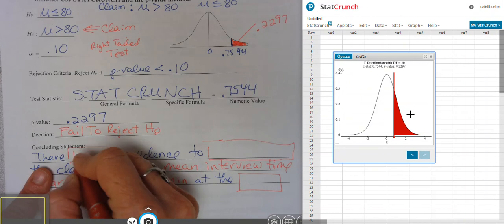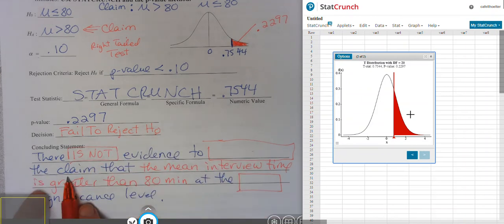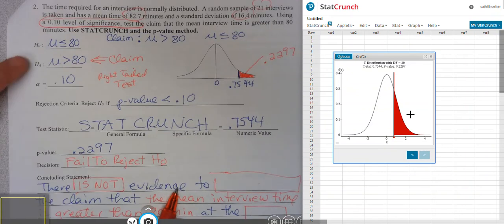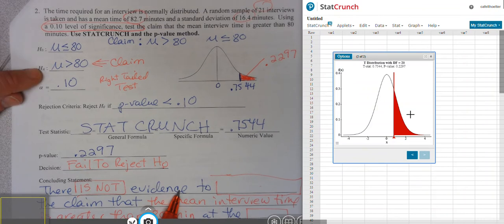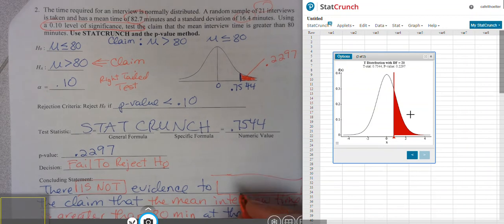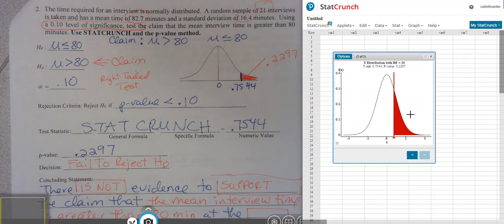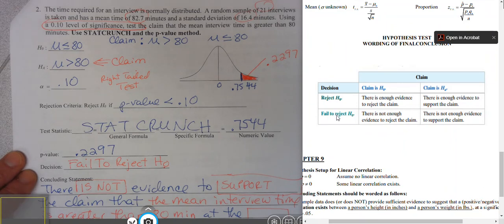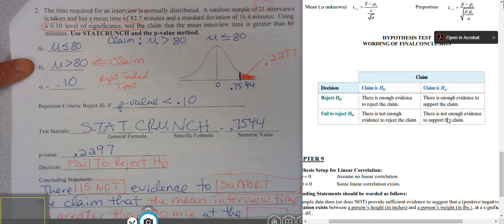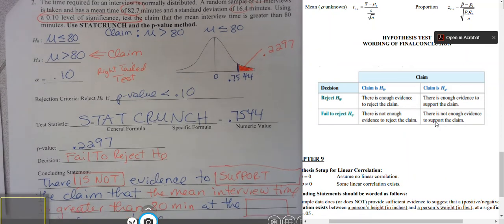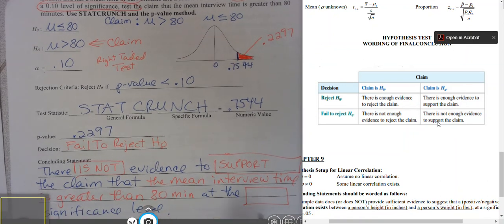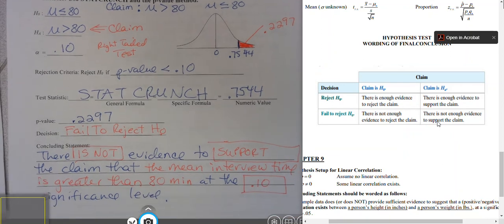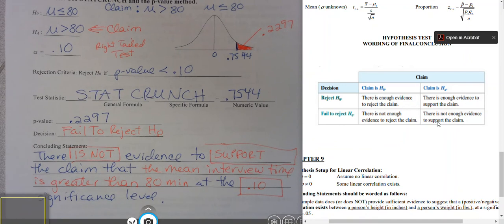For the concluding statement, since we failed to reject and the claim was the alternative hypothesis, we say: there is not sufficient evidence to support the claim that the mean interview time is greater than 80 minutes at the 0.10 significance level. This concludes the video for doing hypothesis tests for means.